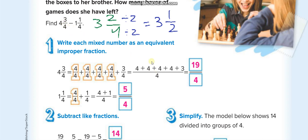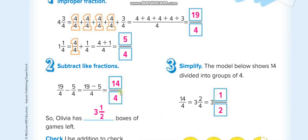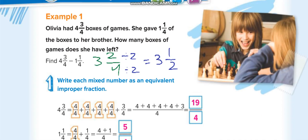There is also the method of converting to improper fractions. Multiply the whole number by the denominator: 4 times 4 is 16, add the numerator: 16 plus 3 is 19 over 4. For the second: 1 times 4 is 4, plus 1 is 5 over 4. Subtract: 19 minus 5 is 14 over 4. Convert back: how many 4s in 14? Three, with 2 remaining — so 3 and 2 over 4, simplified to 3 and 1 over 2.